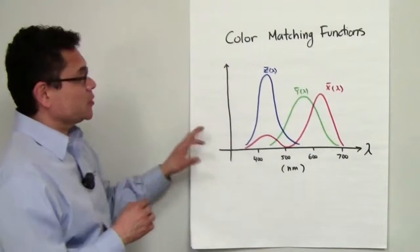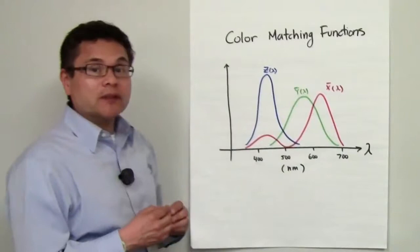In this color matching function diagram, you could see the response of the human eye to the green, the red, and the blue components of a primary.